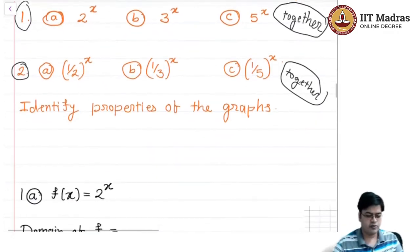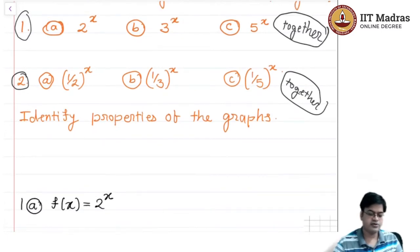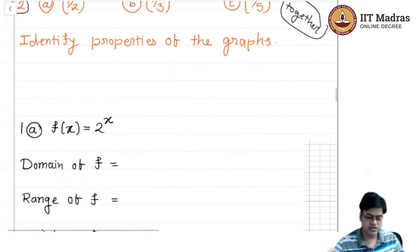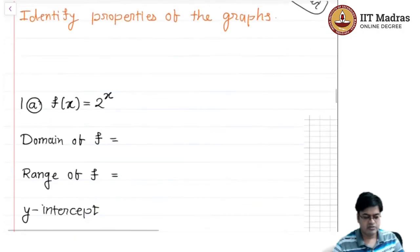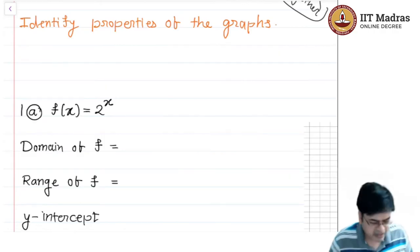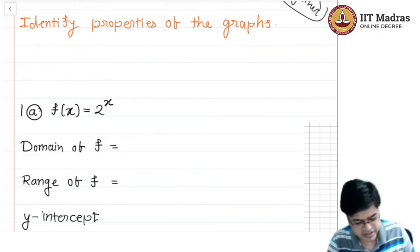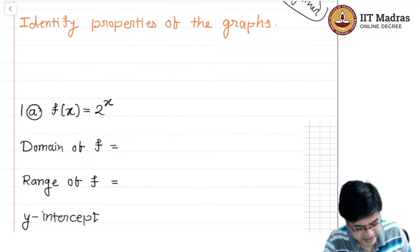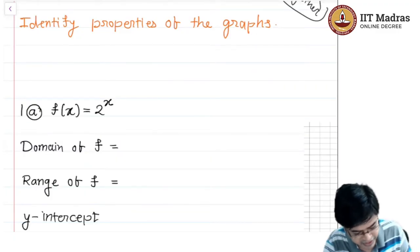Let us first take example 1a, which is f(x) = 2^x. If you have used Desmos, you must have got the figure of the function, but prior to that, let us see what should be the domain of this function. We have already discussed that the domain can be the entire real line.